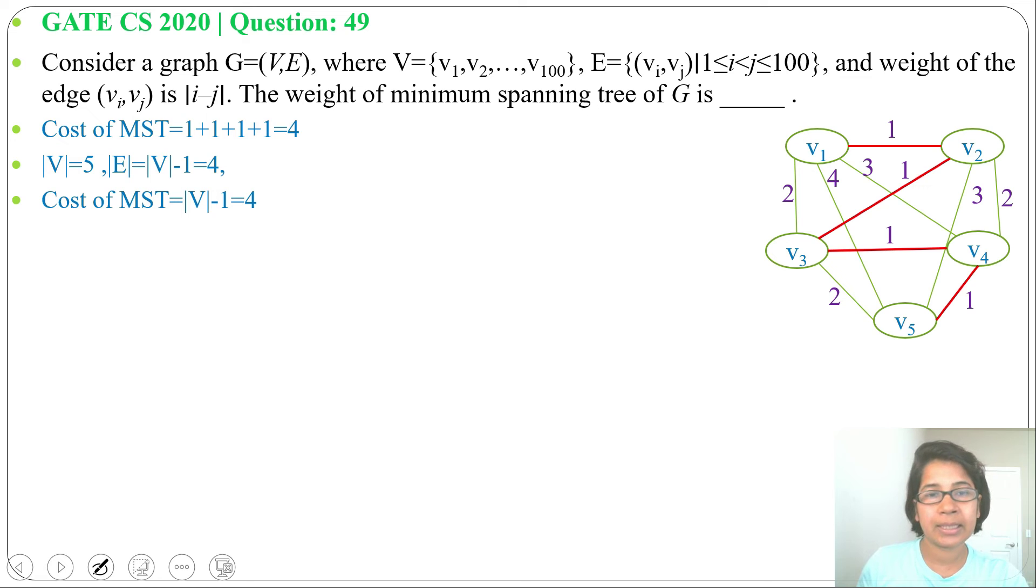Now come to this question. Here 100 vertices are there. 100 vertices means in minimum spanning tree there will be 99 edges (number of vertices minus one, so 100 - 1 = 99). In minimum spanning tree, cost will be 99 multiplied by 1, which is 99. So the answer will be 99.